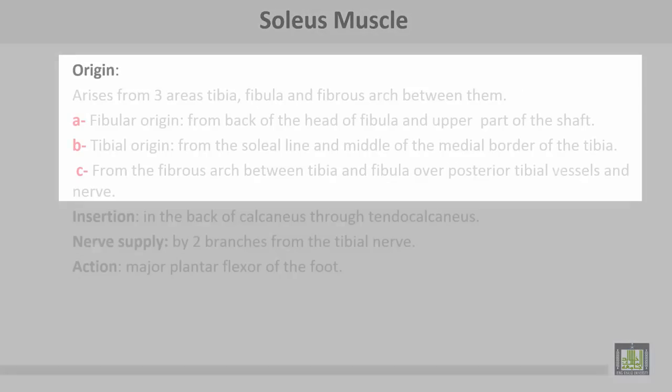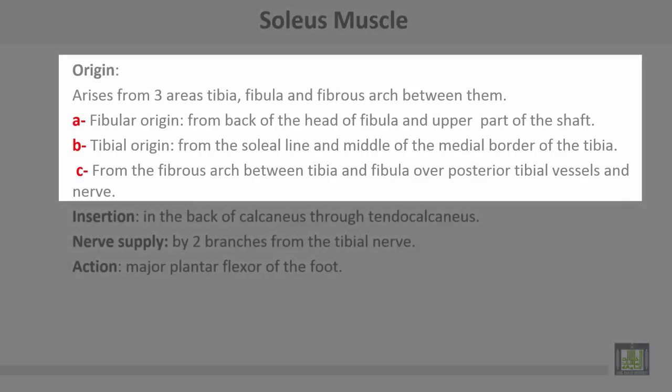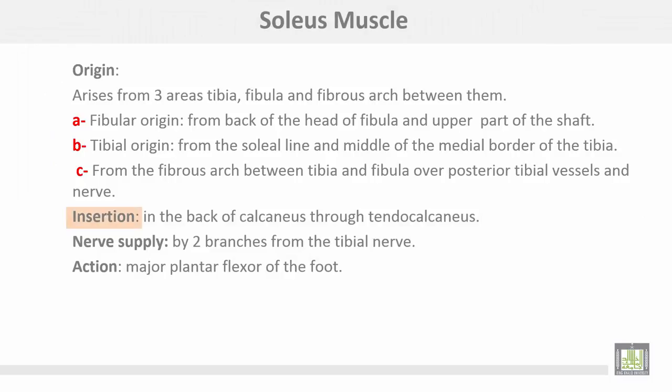Soleus muscle originates from three areas: tibia, fibula, and the fibrous arch between them. The fibular origin is from the back of the head of the fibula and the upper part of the shaft. The tibial origin is from the soleal line and the middle of the medial border of the tibia. It also originates from a fibrous arch between the tibia and fibula, over the posterior tibial vessels and nerve. Insertion is in the back of the calcaneus through the tendo calcaneus. Nerve supply is by two branches from the tibial nerve. Action: it is the major plantar flexor of the foot.